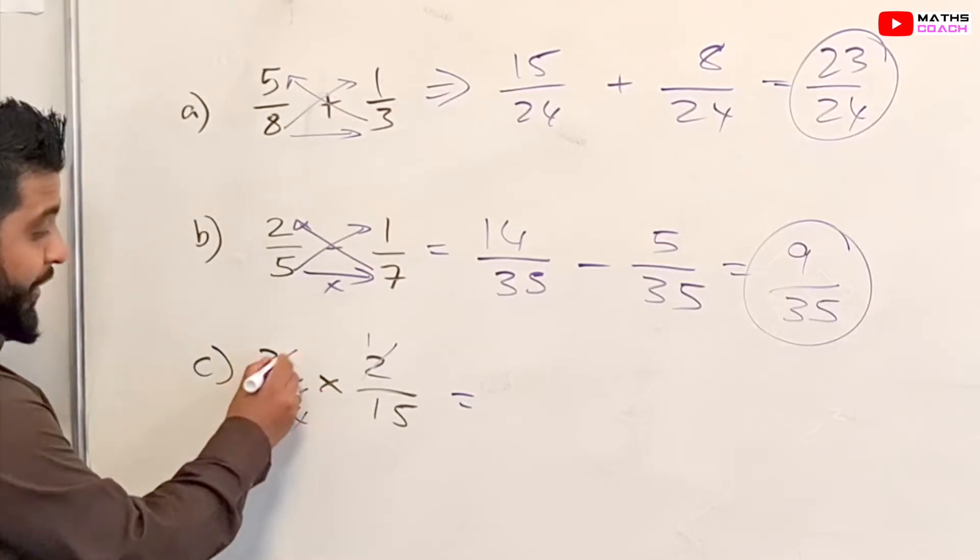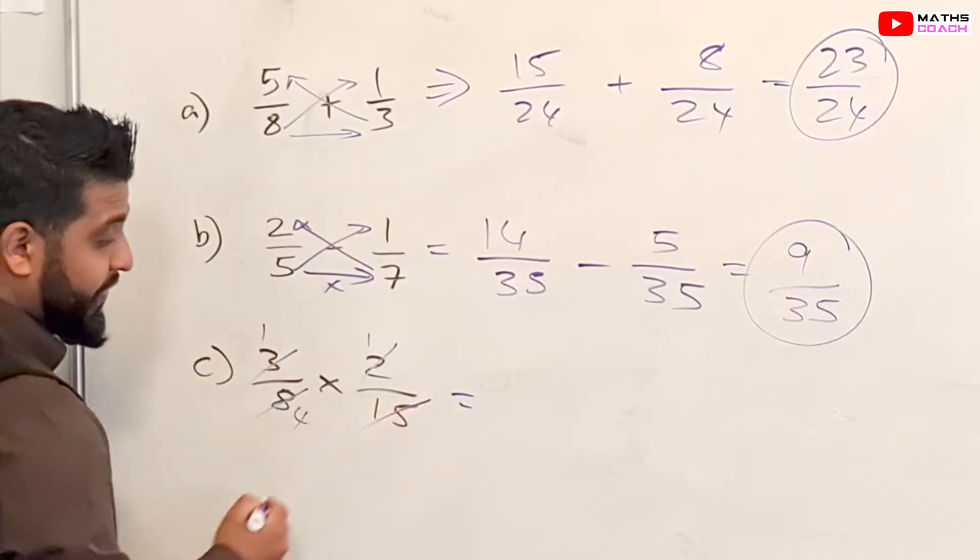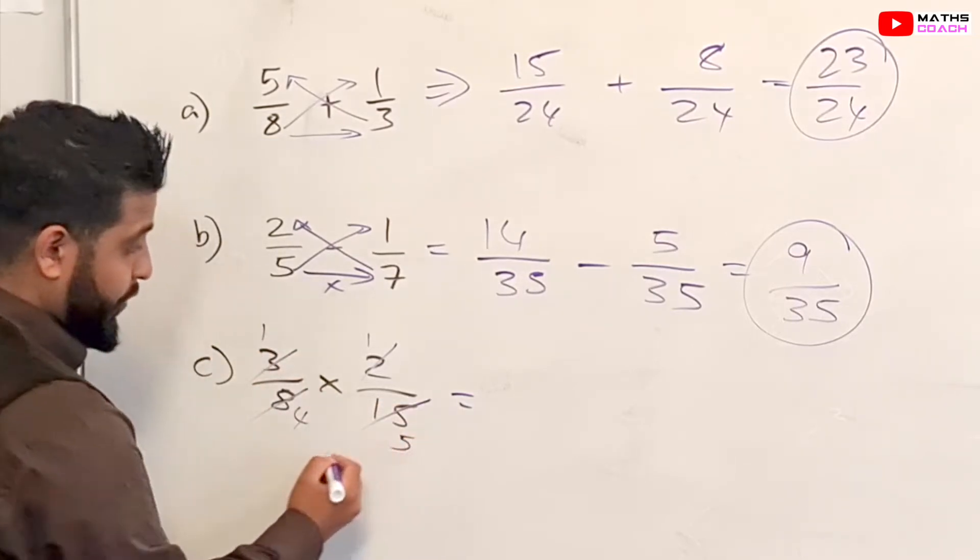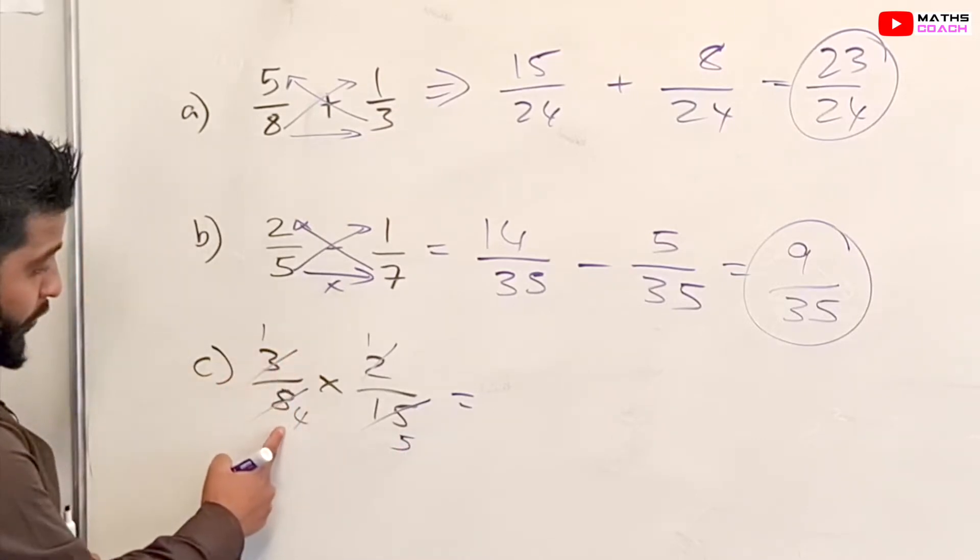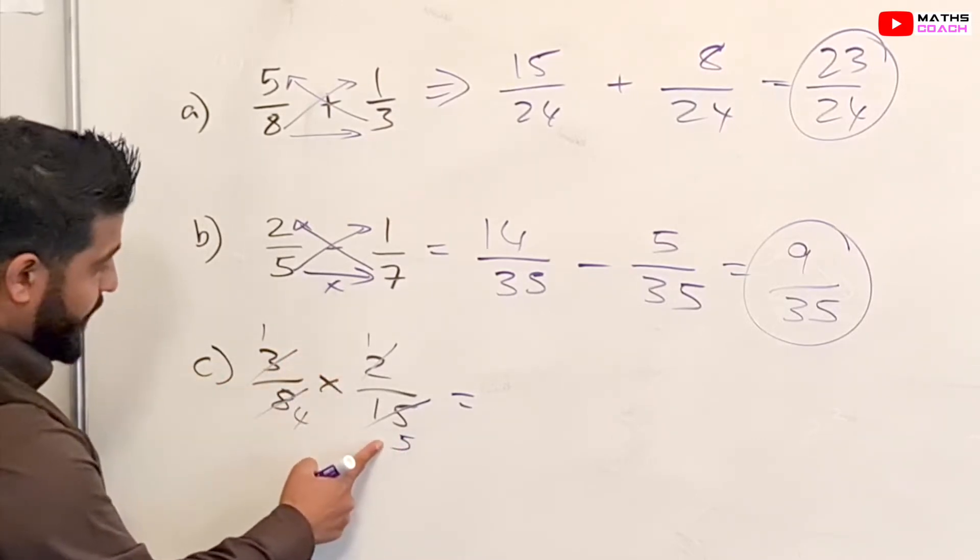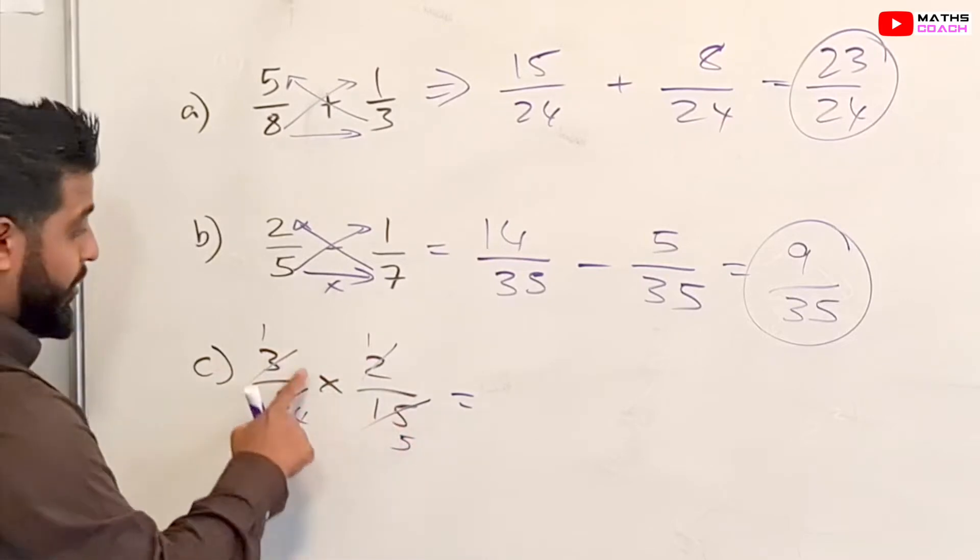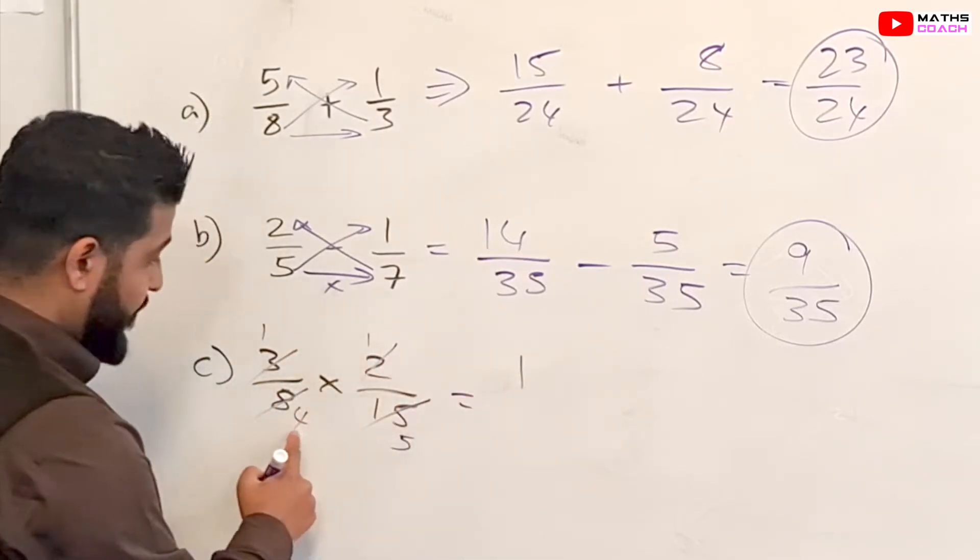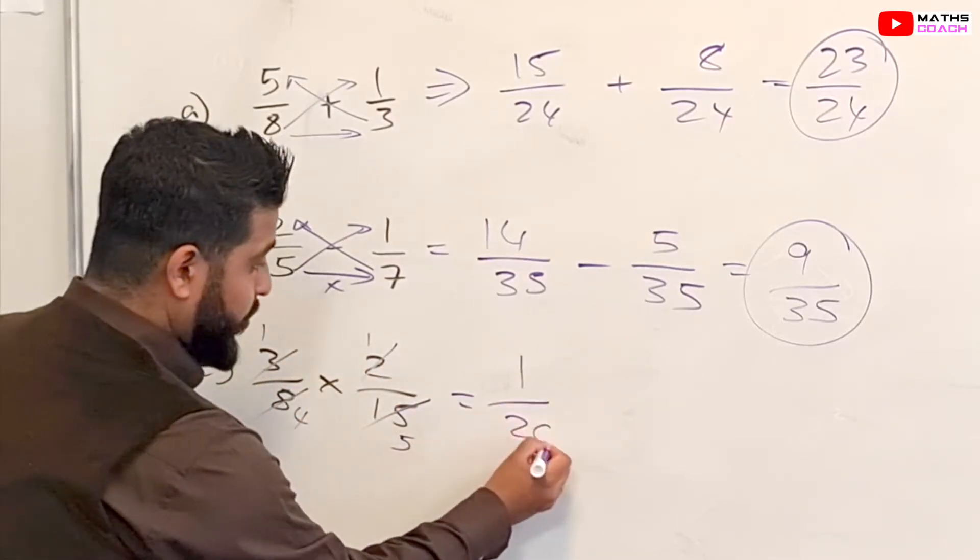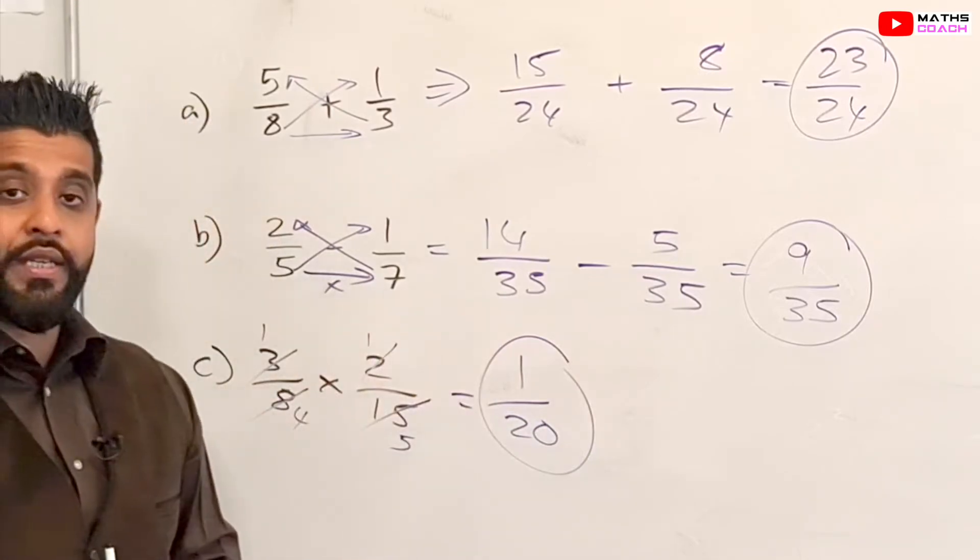Again with 3 and 15 they have something in common. They can both be divided by 3. So 3 divided by 3 is 1, 15 divided by 3 is equal to 5. So you end up with 1 over 4 times by 1 over 5. And now you can just multiply across. 1 times 1 is 1, 4 times 5 is 20. So 1 over 20 is our answer.